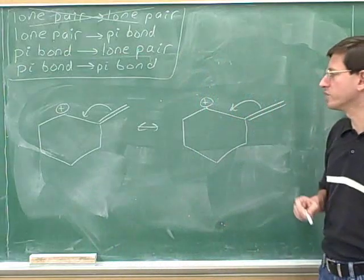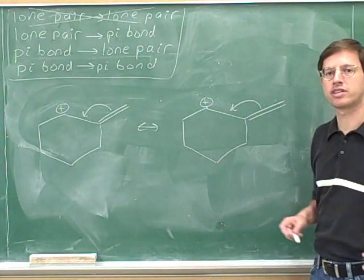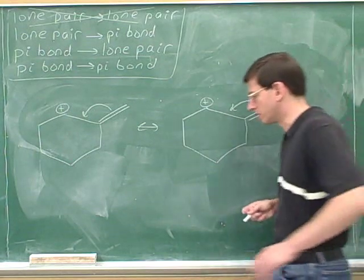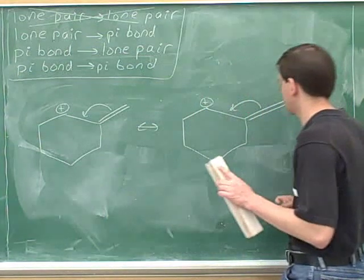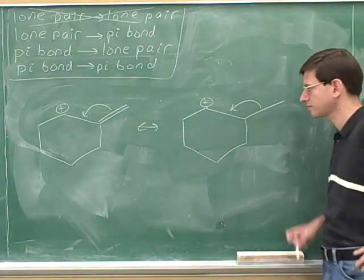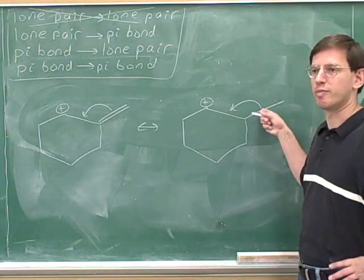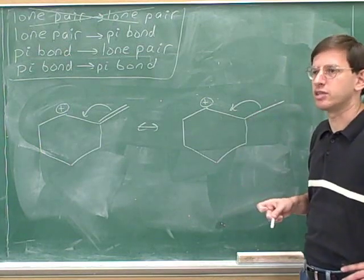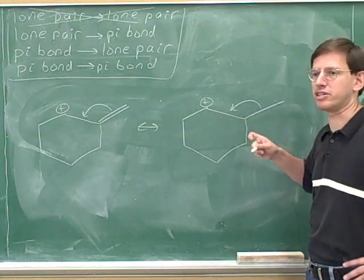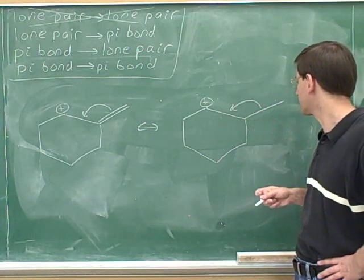We start by redrawing the original picture. Now we're going to modify it. Where are the electrons coming from? The tail of this arrow is on a pi bond, so the electrons are coming from the pi bond — so we erase the pi bond. Remember, though, that we would never erase this bond. In resonance, you never break sigma bonds. Once you're down to a single bond, you can't break that. You can only break the pi bond.